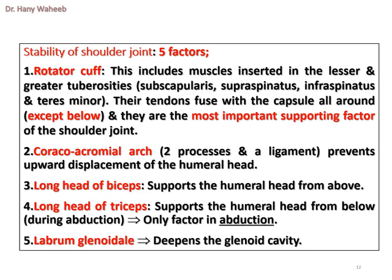Stability of the shoulder joint — five factors. 1. Rotator cuff: includes muscles inserted into the lesser and greater tuberosities — subscapularis, supraspinatus, infraspinatus and teres minor — whose tendons fuse with the capsule all around except below; they are the most important supporting factor. 2. Coracoacromial arch — two processes and a ligament — prevents upward displacement of the humeral head. 3. Long head of biceps supports the humeral head from above. 4. Long head of triceps supports the humeral head from below during abduction and is the only factor in abduction. 5. Labrum glenoidale deepens the glenoid cavity.